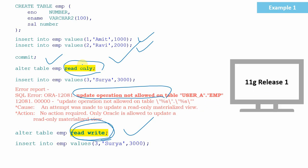Now let us see one more method of implementation. Before that, this option of making a table read-only using the READ ONLY keyword, or enabling the table using the READ WRITE keyword, is available from Oracle 11g Release 1 only, because this is a new feature introduced from 11g Release 1. In prior versions, there are a few alternative ways to implement — that's what we are going to see in the next examples.